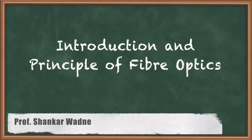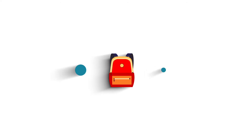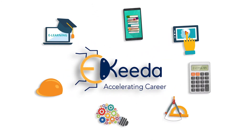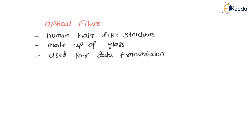Hello, dear students. Today we will see what is meant by optical fiber and its mechanism. Optical fibers are very small thread-like structures, just like human hairs, with a much smaller diameter of about 0.5 mm to 1 mm. They are made up of glass material, and the main thing is we use them for data transmission over long distances. In optical fiber, we transmit data in the form of light waves.